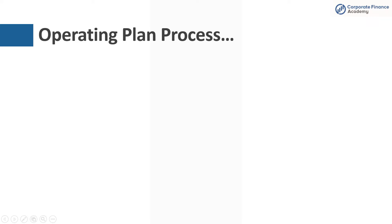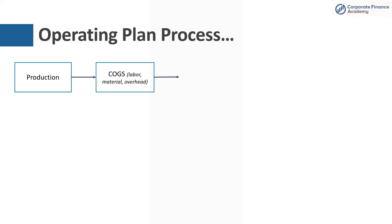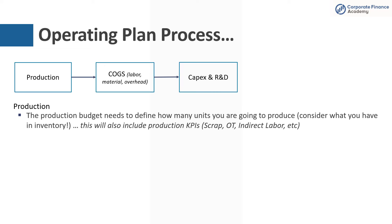Looking at production in more detail: when establishing your production plan, you're going to understand how much labor, material, and overhead you'll spend, and think through your CapEx budget and R&D if applicable. The production side is really about how many units you're going to make. You also have to think about your inventory — if you have a lot of inventory at the start of the year, you might not have to produce as much as demand calls for. Conversely, if your shelves are bare, you may need to produce more than demand. You'll also be setting your KPIs for the year — things like scrap, overtime, and indirect labor.